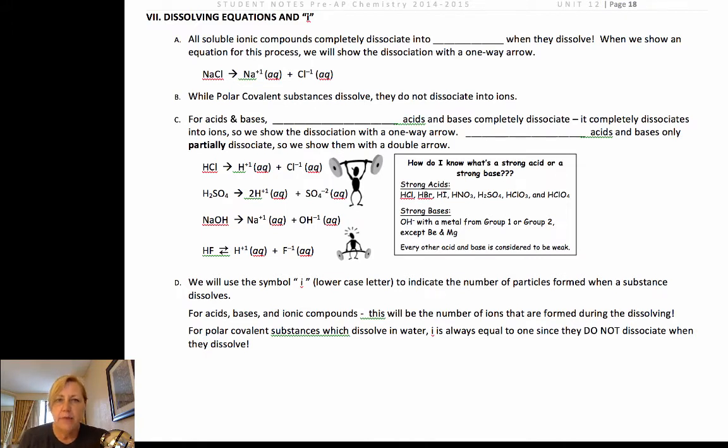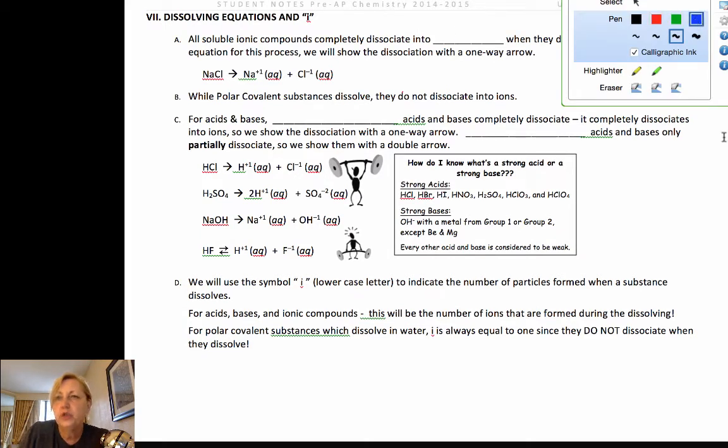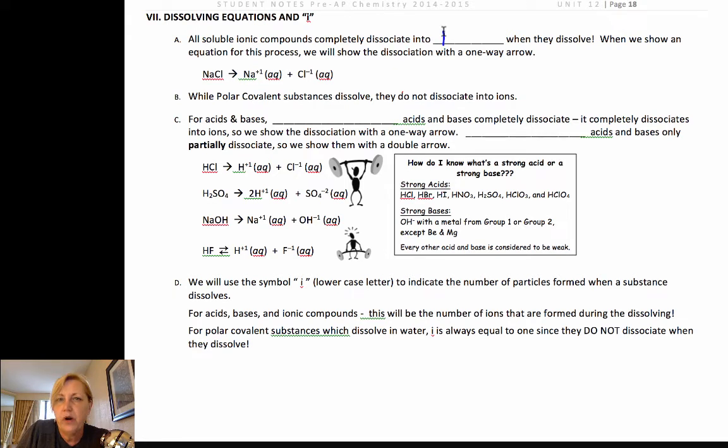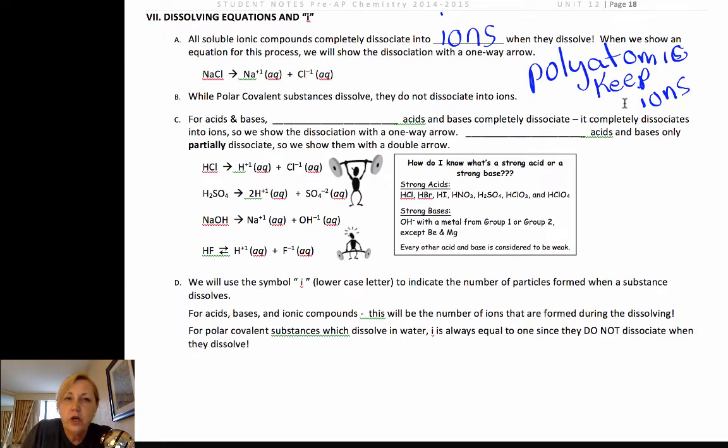When ionic compounds completely dissociate into ions they've dissolved. In order to dissolve they completely break apart into their ions. Now they are not decomposing. Do not take apart your polyatomic ions. Keep them intact because we're separating into separate ions so they stay as their polyatomic ions. When polar covalents dissolve there's a force of attraction formed through intermolecular forces, but they don't dissociate into ions because by definition they don't have ions.